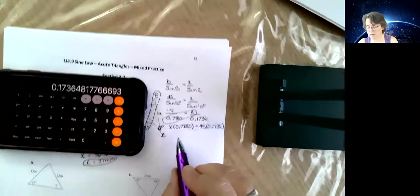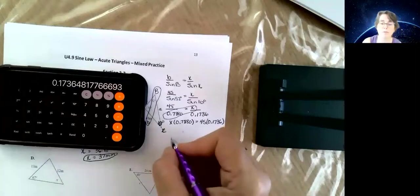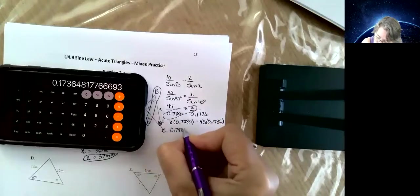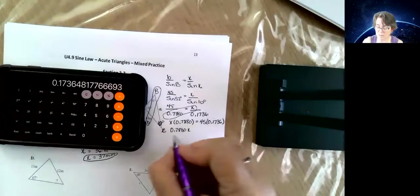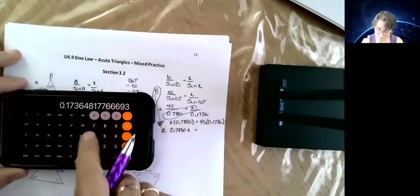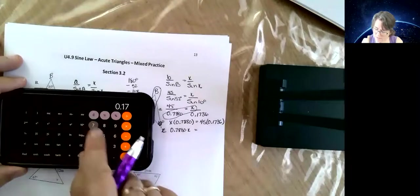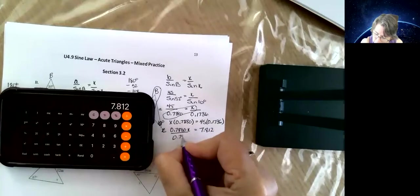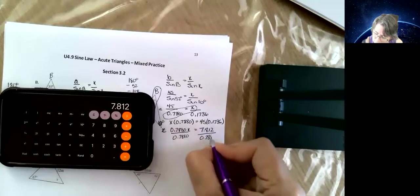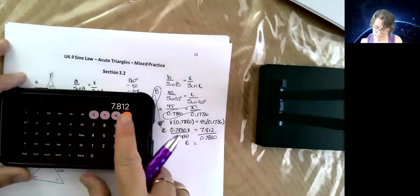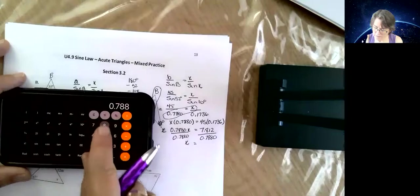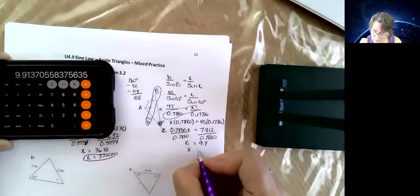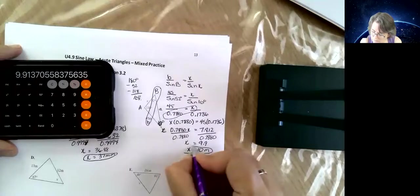Before you get worried that I wrote the x first and then put the number, that was just an oops. I'm working in pen, so we'll just leave it. Multiplication order really doesn't matter, but it looks weird, so I'm going to flip it. 45 times 0.1736 equals 7.812. And divide it out: 5 divided by 0.7807. X is equal to 10 meters.